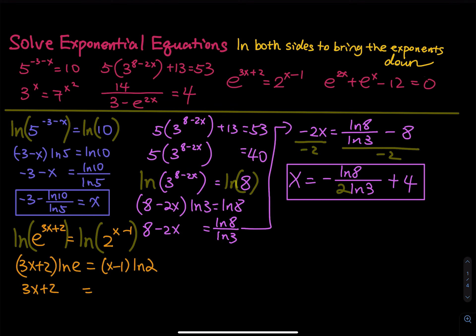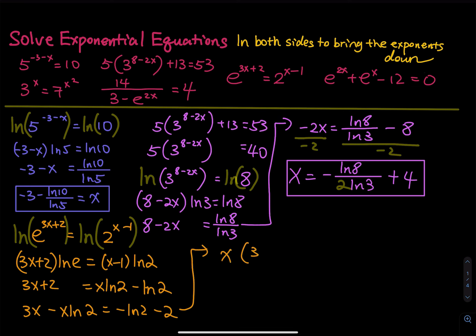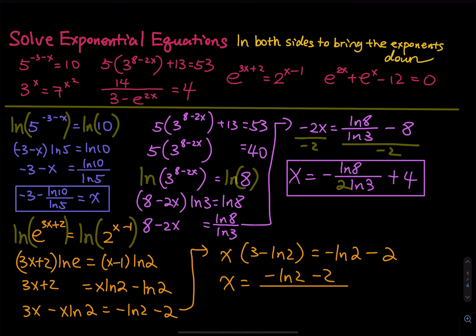We distribute ln2, giving x ln2 minus 1 times ln2. Moving all x terms to one side: 3x minus x ln2 equals negative ln2 minus 2. Factor out x: x times (3 minus ln2) equals negative ln2 minus 2. Dividing both sides by the parenthesis, we have x equals negative ln2 minus 2, all divided by 3 minus ln2. That is the final answer to the third equation.